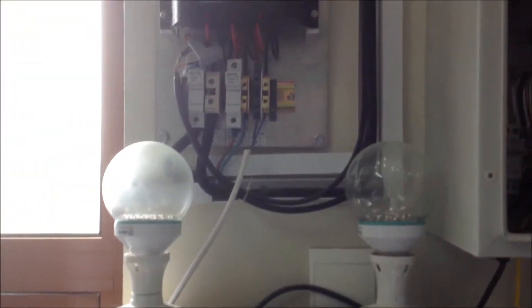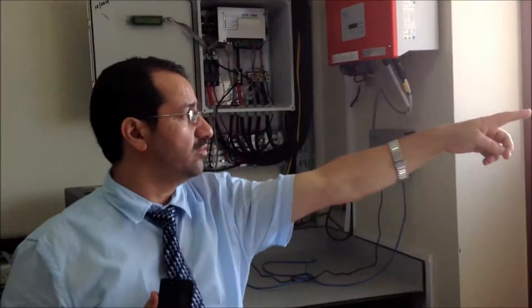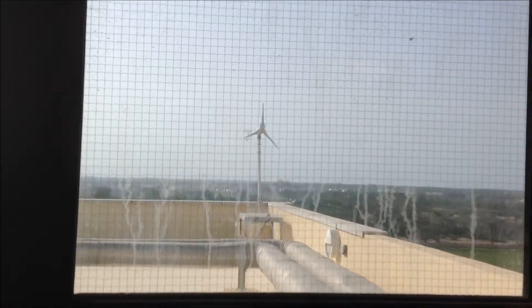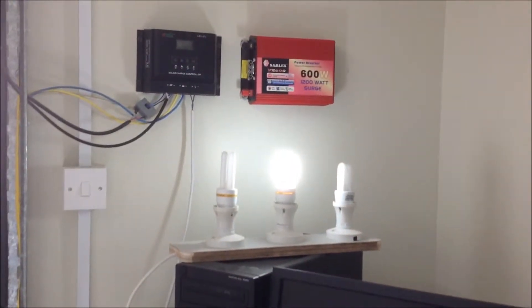For the hybrid system, you can see here it's rotating now because there is wind coming. There is a solar panel down with it. The cables come inside. These are the inverter and the cables and the load connected to this system.